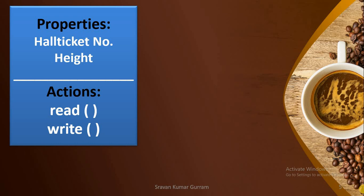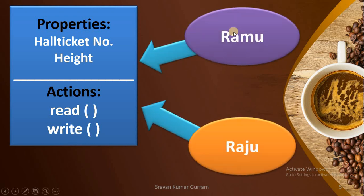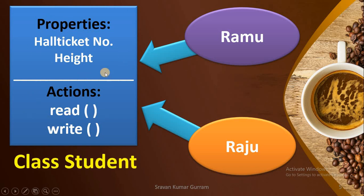We want to create a unit to place the common properties of the two students. The common properties are hall ticket number and height, and the common actions that can be done by both students are read and write. If we write these common properties and actions as a single unit, that is called a class. We can define a class as a collection of common properties and actions of the objects.